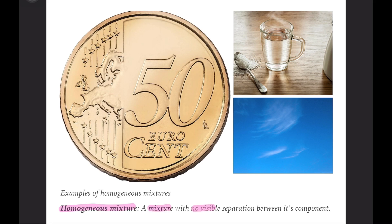Homogeneous mixture is defined as a mixture with no visible separation between its components. For example, this coin here. This is a bronze coin. Bronze consists of copper Cu and tin Sn. But if we look closely, where is the tin, where is the copper? We cannot see it. Bronze already looks like one coin.